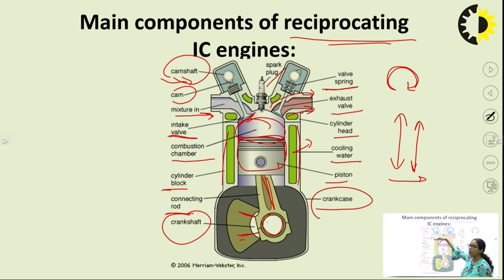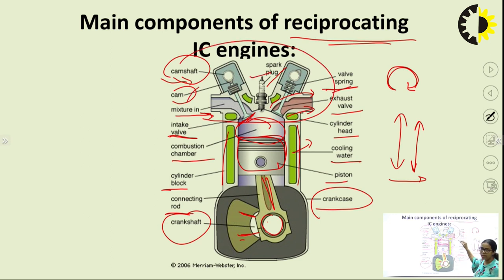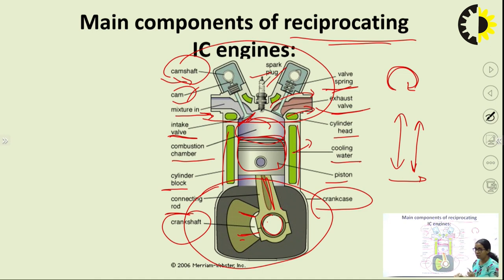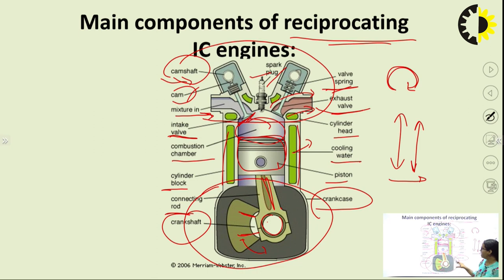The upper part is the cylinder head where valves, spark plug, and cam operations are mounted. The middle portion is the cylinder block where combustion and piston motion take place. The lower portion is where the crank works — rotary motion takes place as the connecting rod transmits the reciprocating motion of the piston into the rotary motion of the crankshaft.